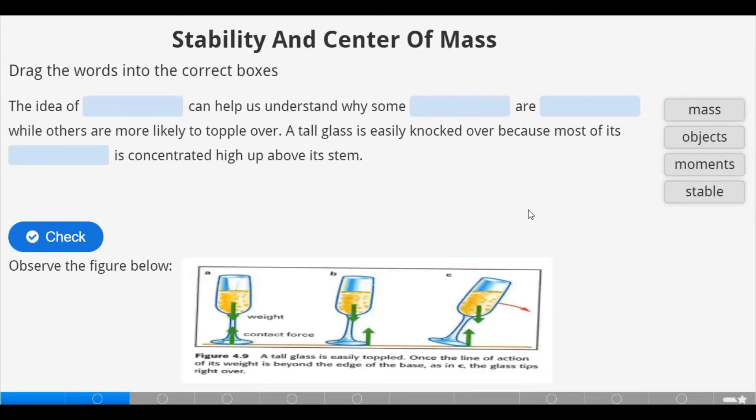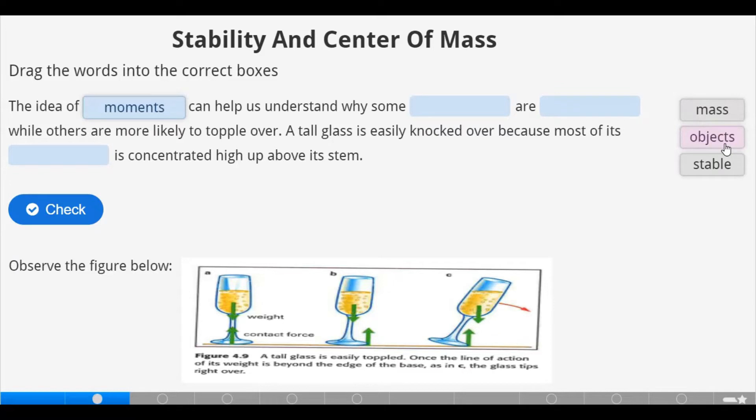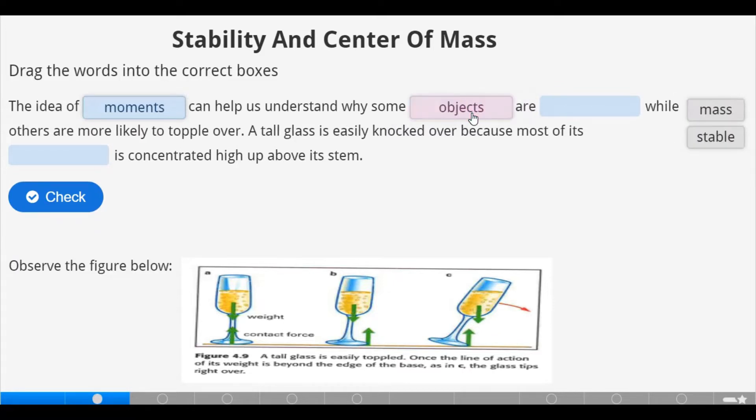For us to be able to determine stability and the center of mass of an object, we need to drag the following words into the correct boxes. The idea of moments can help us understand why some objects are stable while others are more likely to topple over.